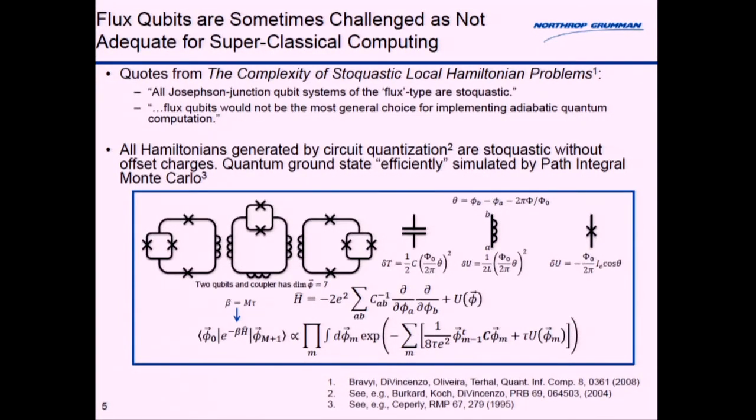One of the central challenges of designing into a flux qubit system is that you'd like to look for non-stoquastic couplings. Flux qubit systems are sometimes challenged as not adequate for generating non-stoquastic couplings. The general argument is as follows: if you take a general circuit from circuit quantization, here's the components that you can have in such a system—capacitors, inductors, and Josephson junctions.